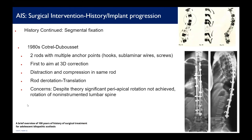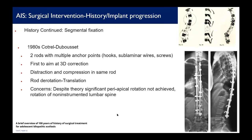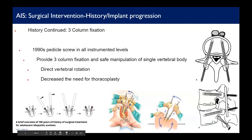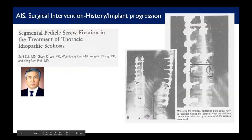In the 1980s, the Cotrel-Dubousset instrumentation featured two rods with multiple anchor points — hooks, wires, and some screws — and was the first to aim for three-dimensional correction rather than just coronal plane correction. By the end of the 80s, pedicle screws were being introduced. In the 1990s, pedicle screw instrumentation became more prevalent, allowing segmental instrumentation with three-column fixation and vertebral body derotation, which decreased the need for thoracoplasty.